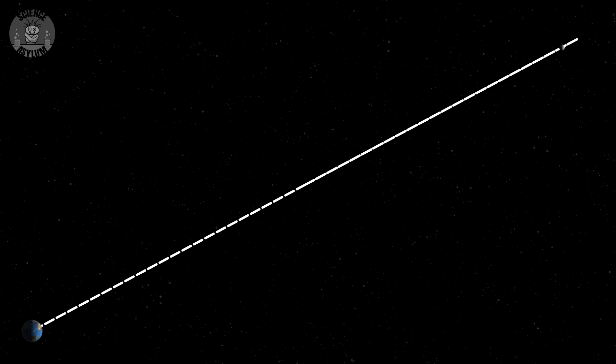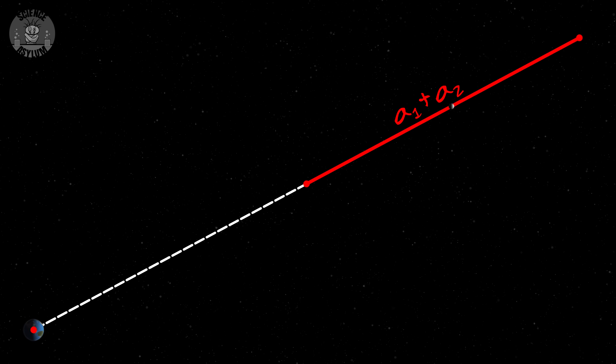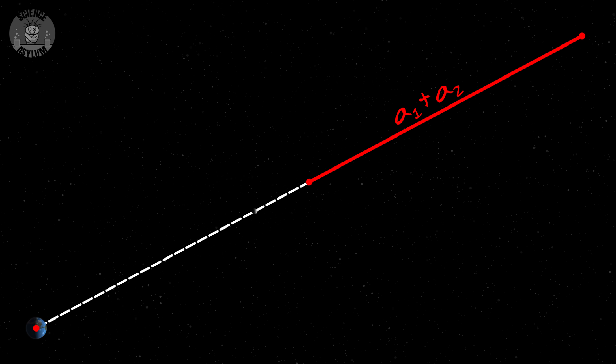This trick will work for any free-fall problem. Want to know how long it would take for the Moon to fall into the Earth? The sum of the semi-major axes is just half the distance to the Moon. The time? 4.8 days.